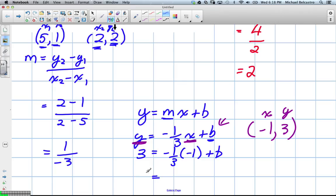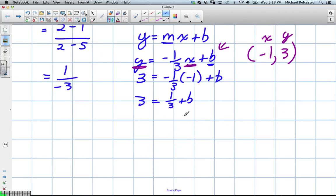So 1 third times negative 1. Well, 1 times anything is the same number. But because it's a negative times a negative, we're going to get positive. And the goal is we've got to get b by itself. So we want to move a third, and it's positive now, to the other side. So this is going to read 3 subtract 1 third. So we've got to remember our fraction rules here.